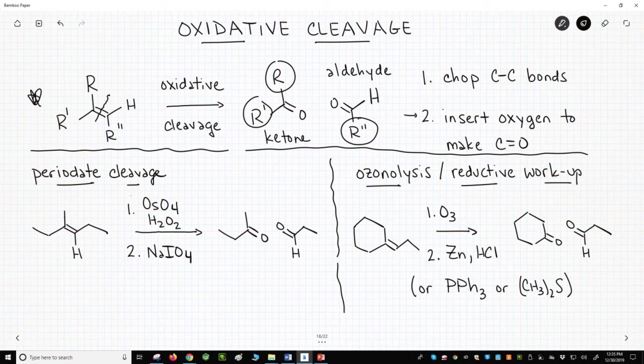The two processes that give these products from alkene both require two steps. The first option is in the lower left, a periodate cleavage.